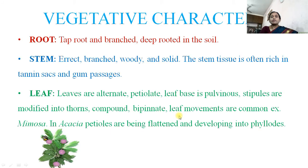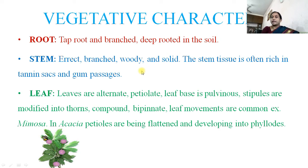Vegetative characters include roots: taproot, branched, deep-rooted in the soil. The stem is erect, branched, woody, and solid. The stem tissue is often rich in tannin sacs and gum passages; therefore almost all plants in this family possess gum passages and they exude gum.